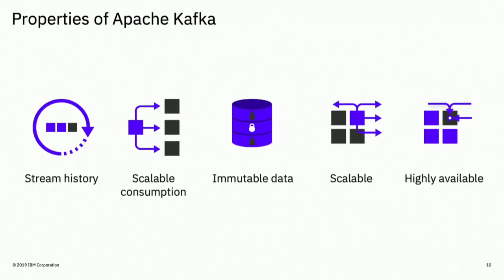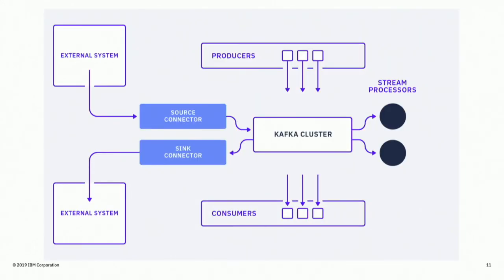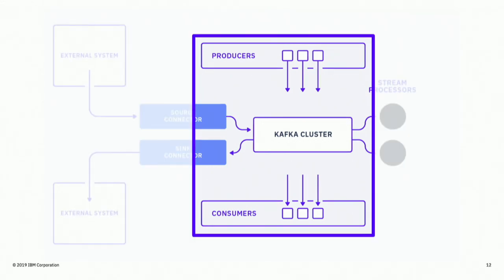Some of the properties you get with Apache Kafka are stream history, scalable consumption, and immutable data. It's also scalable within itself — it's built to be scalable and highly available. I'm going to focus on core Kafka: how you produce to Kafka, how you consume, and a little bit about how the cluster itself works.